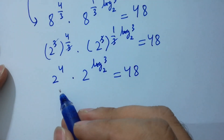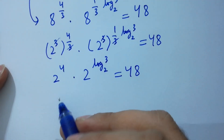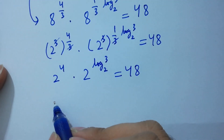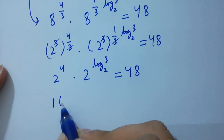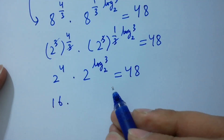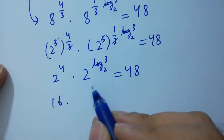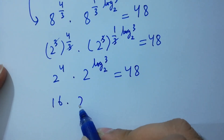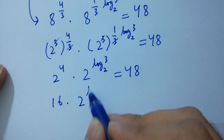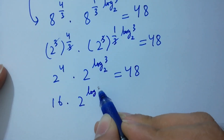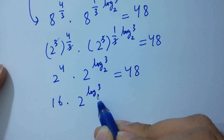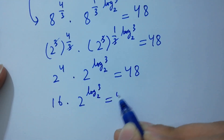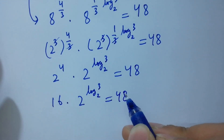2 to the power 4 is 16, times 2 to the power log 3 to the base 2, equals 48.